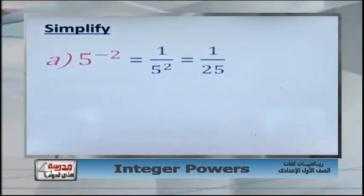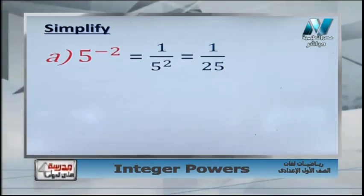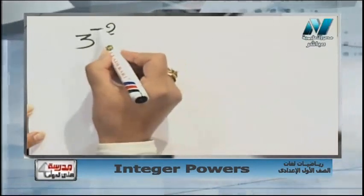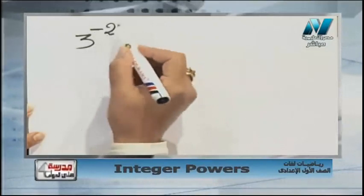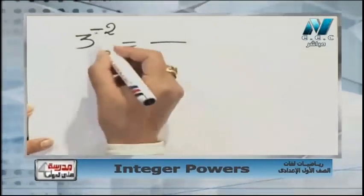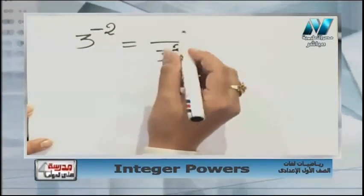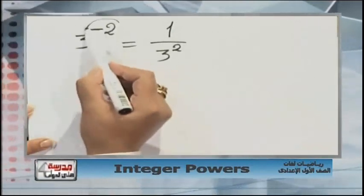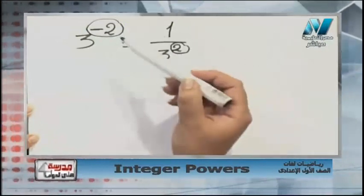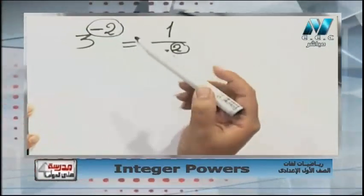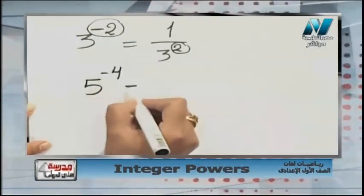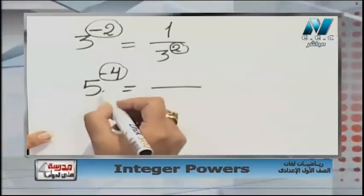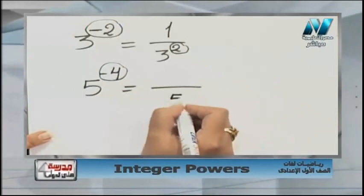New rule: if we have 3 power negative 2 — a negative power — we can change it into a positive power. 3 power negative 2 becomes 1 over 3 power 2. If we have a negative power, change it into positive by changing its position: if it's in the numerator, it moves to the denominator. Another example: 5 power negative 4 — negative power moves down to the denominator, becoming 1 over 5 power 4.